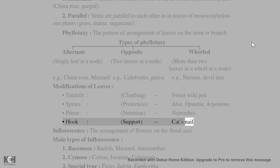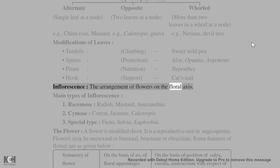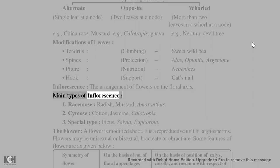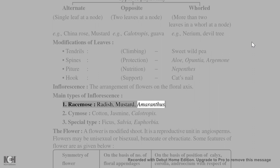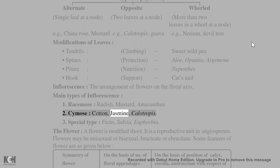Inflorescence is the arrangement of flowers on the floral axis. Main types: (1) Racemose — e.g., radish, mustard, amaranthus; (2) Cymose — e.g., cotton, jasmine, Calotropes; (3) Special type — e.g., Ficus, Salvia, Euphorbia.